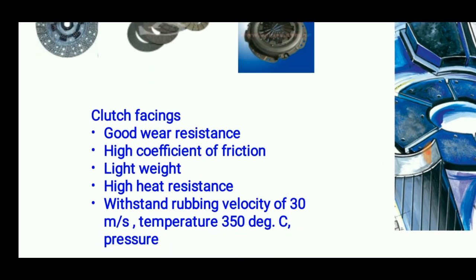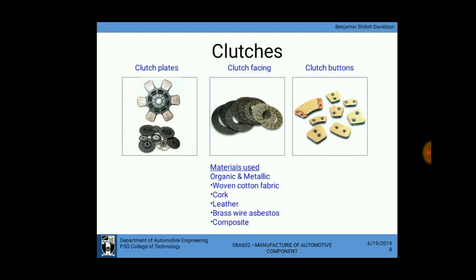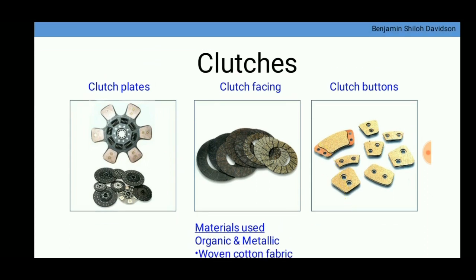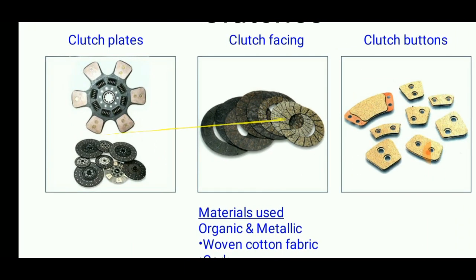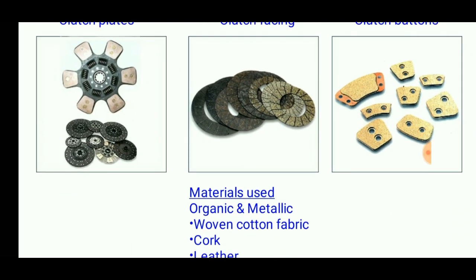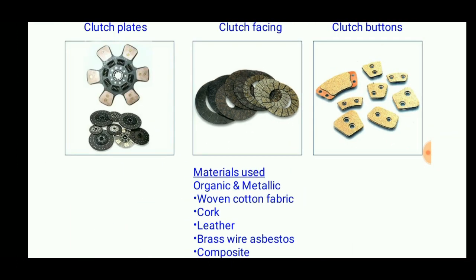The clutch facing must be highly heat resistant and withstand rubbing velocity. Clutch plates, clutch facings, and clutch buttons are all parts whose materials include organic and metallic compounds, as well as woven cotton fabric used in clutch buttons.